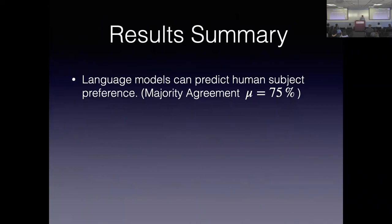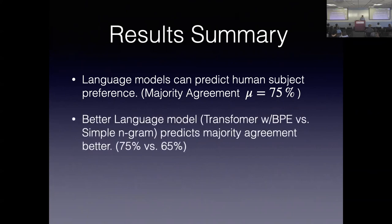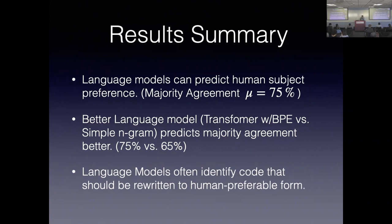The result summary: language models can really predict human subjects' preferences. If you take majority agreement, they are 75% accurate in predicting human subjects' preference. And better language models can predict majority agreement better — this is really cool. There's a new paper in PNAS with the same results for natural language — better language models are better at predicting how people understand and comprehend language. So this basically says the more you improve your language models, the better they are at predicting human preference in code. The other cool thing was that in looking at the corpus, there are plenty of places where language models can tell you that you should rewrite this code to improve readability.